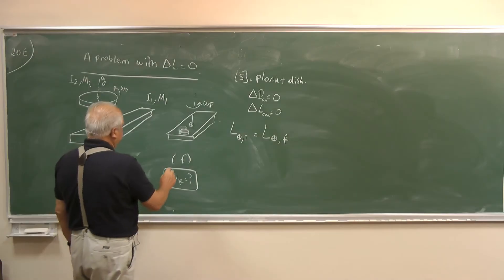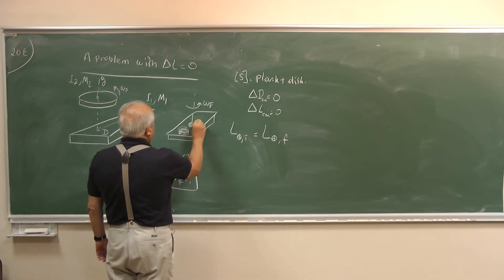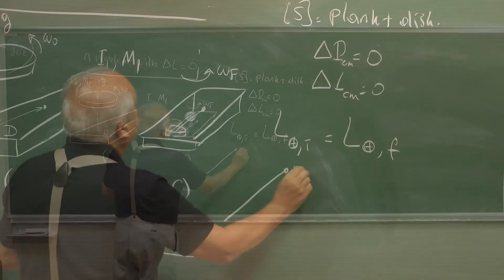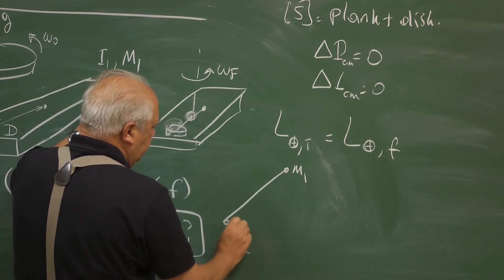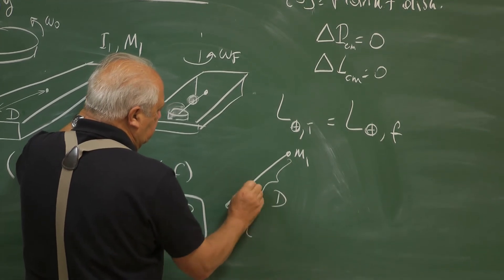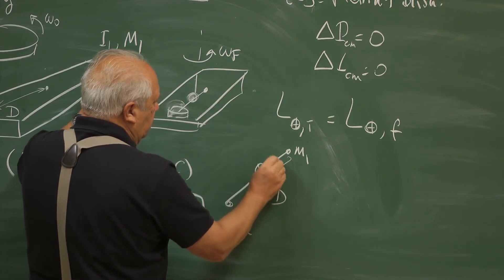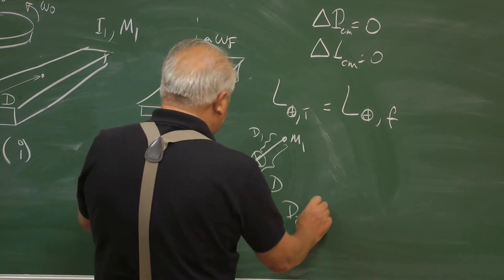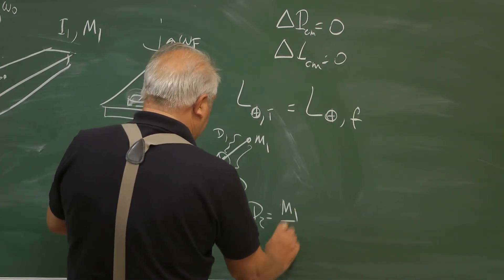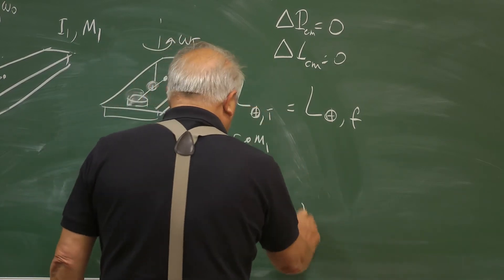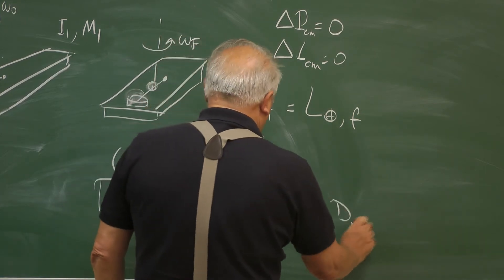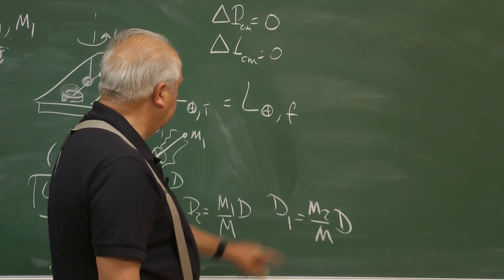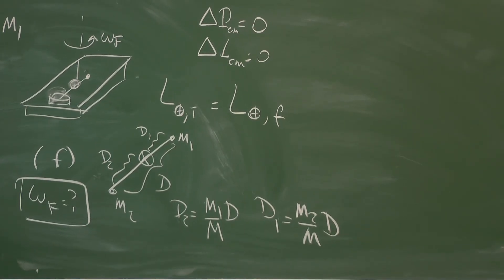Now, where is the center of mass? This is the center of the plank so if I just write this here is M1 and here is M2, this distance is D therefore the central mass is here this is D1 and this is D2. D2 is M1 over M times D and D1 is M2 over M times D so that when we add them it is D. If M2 were 0, D1 is 0 namely the central mass will be here, so that's the proportion.